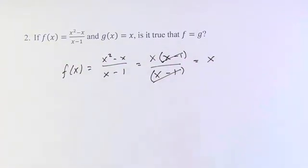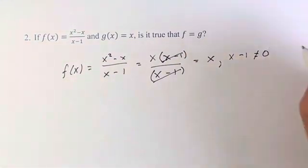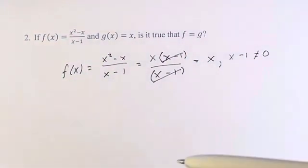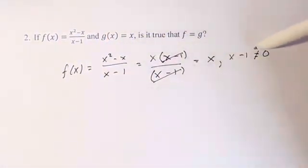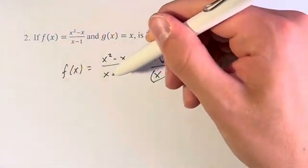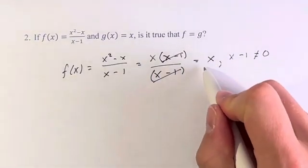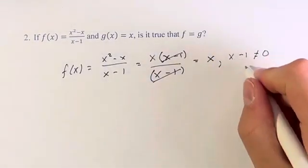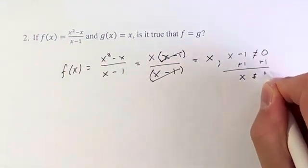Since we were dividing by x minus 1 and we're no longer dividing by x minus 1, we have to add a caveat here that x minus 1 cannot equal 0 by the terms of the original function, even though when we simplified it, this doesn't have to be followed anymore. If you plug in 1 to the original function, you're dividing by 0 which is a big problem. We lose that here so we have to add it back in. What this means, if we add 1 to both sides, is that x cannot be equal to 1.